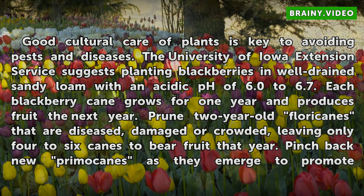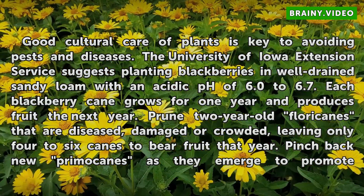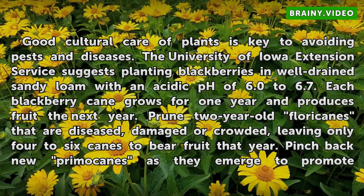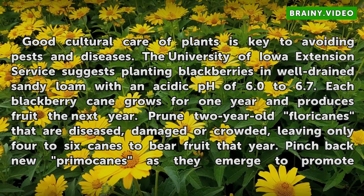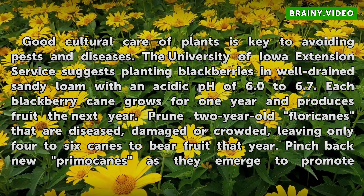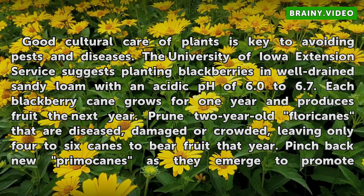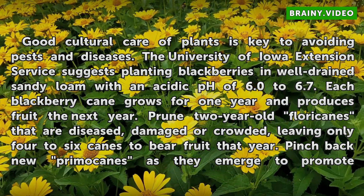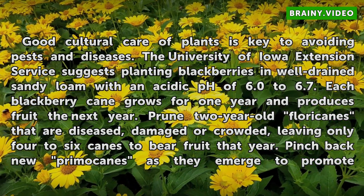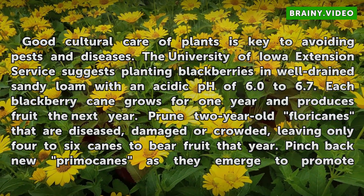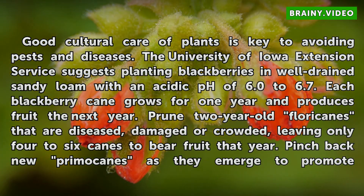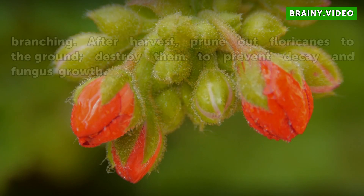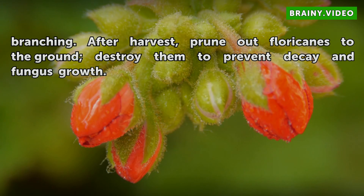Good cultural care of plants is key to avoiding pests and diseases. The University of Iowa Extension Service suggests planting blackberries in well-drained sandy loam with an acidic pH of 6.0 to 6.7. Each blackberry cane grows for one year and produces fruit the next year. Prune two-year-old floricanes that are diseased, damaged, or crowded, leaving only four to six canes to bear fruit that year. Pinch back new primocanes as they emerge to promote branching. After harvest, prune out floricanes to the ground and destroy them to prevent decay and fungus growth.